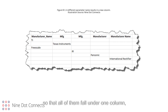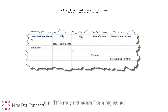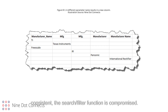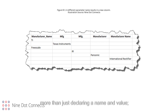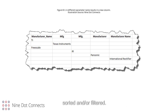Each designer used a different name for the manufacturer's name. Unfortunately, the tools are not smart enough to know that all these ways of writing manufacturer mean the same thing. Therefore, it created a column for each name. Even if the parameter names were corrected so that all of them fall under one column, the values assigned are different. In this example, some used abbreviations for the manufacturer's name, while others spelled it out. This may not seem like a big issue; however, one of the key features of a good library is the ability to sort components based on the information found in the intelligent data. If the data is not consistent, the search/filter function is compromised. Therefore, the intelligent data requires more than just declaring a name and value — it needs to have consistency. It must be consistent so that the information will fall under the appropriate column within the bill of materials, and the value needs to have guidelines or formats so that the information can be successfully sorted and/or filtered.